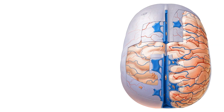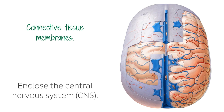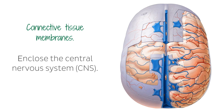This tutorial will be discussing the meninges of the brain, which are thin connective tissue membranes. They enclose the central nervous system, or CNS, and are made up of three layers. We will also be looking at the arterial and venous systems closely related to the meninges of the brain.